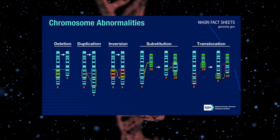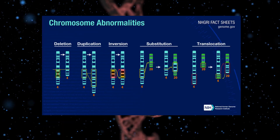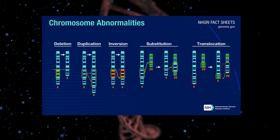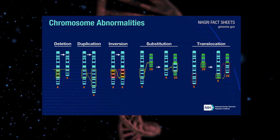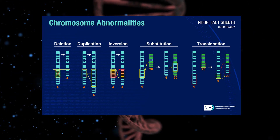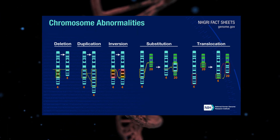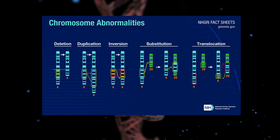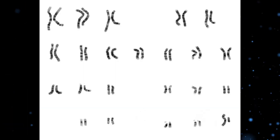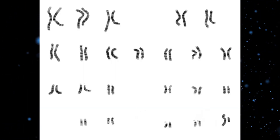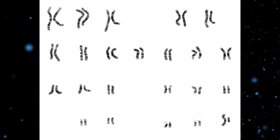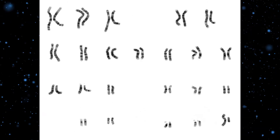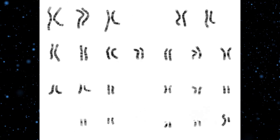Our closest ape relatives have two more chromosomes than we do as a species. These chromosomes in humans have in fact merged together — being 2a and 2b — we lost them some time back in the sense that they became one chromosome, but they still exist as two separate chromosomes in apes.